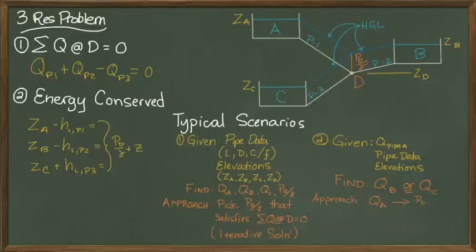Because you are given one flow rate, you can find the pressure head at D. Once you know the pressure head at D, then you can solve for the head loss to or from the other source in question.